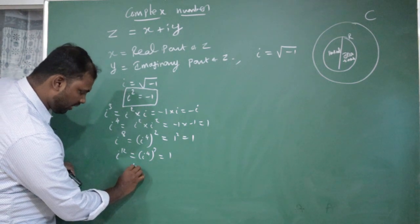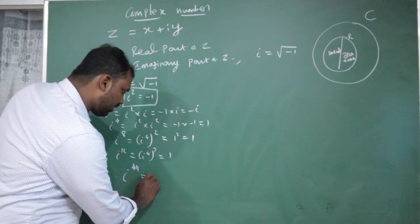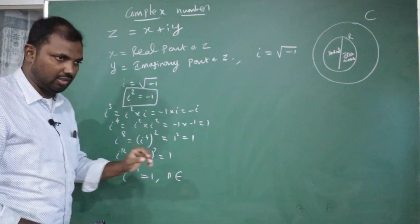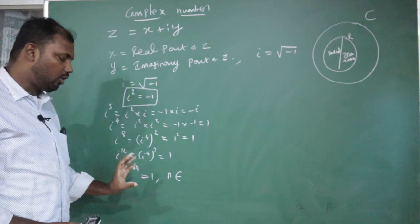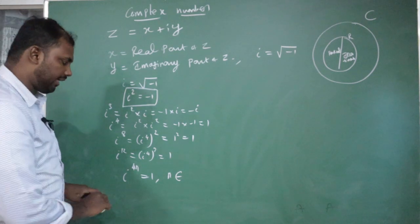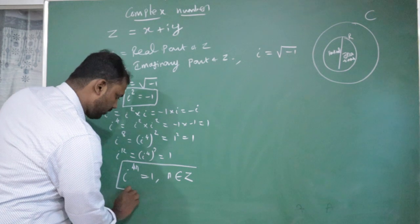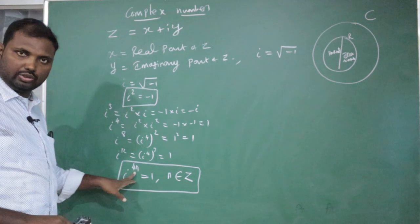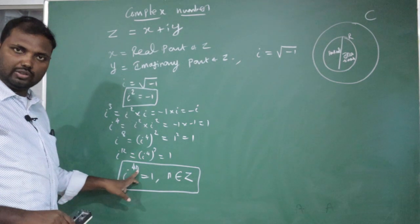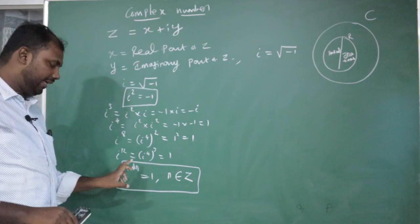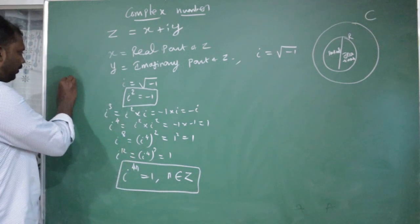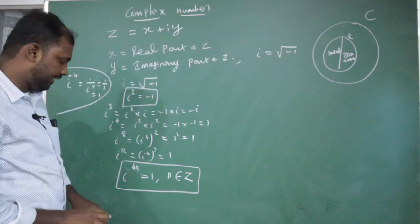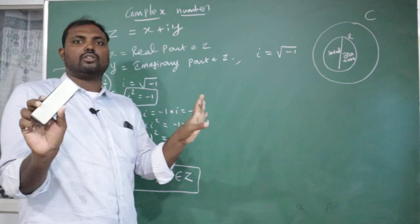We can frame a general result: i to the power 4n equals 1, where n belongs to the integers Z. So i to the power 0, 4, 8, 12, 16 are all equal to 1. Even i to the power minus 4 equals 1 over i to the power 4, which is 1 over 1, so the answer is 1. This is a very important result: any power that is a multiple of 4 gives the value 1.